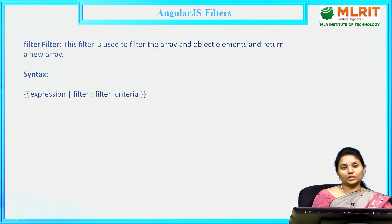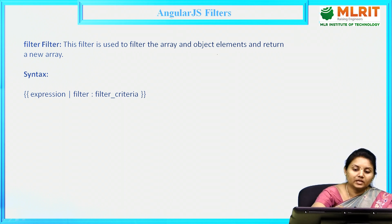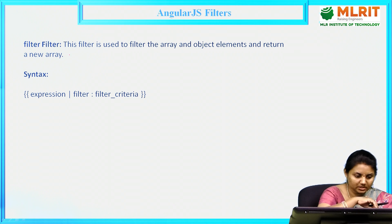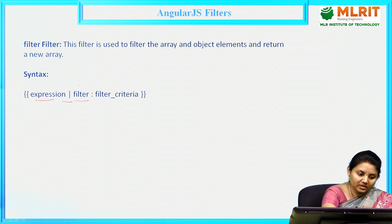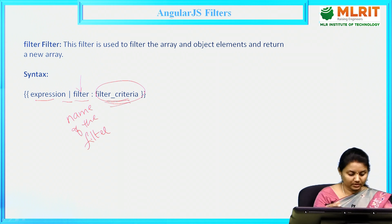Next, the filter filter. Filter filter is used to print a subset, meaning part of an array. It filters the array object elements and returns a new array. The syntax is: expression, pipe symbol, then 'filter', colon, and then the filter criteria — any condition you want to give can be provided here.